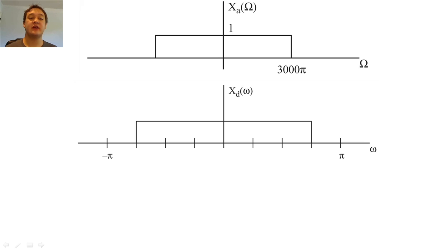Let's suppose that our X sub a of omega is an ideal low-pass filter with band limit 3,000 pi radians per second. If we sample at 4,000 hertz, the band limit of the digital filter would be 3 pi over 4. We would also scale the height of the digital filter to 4,000.